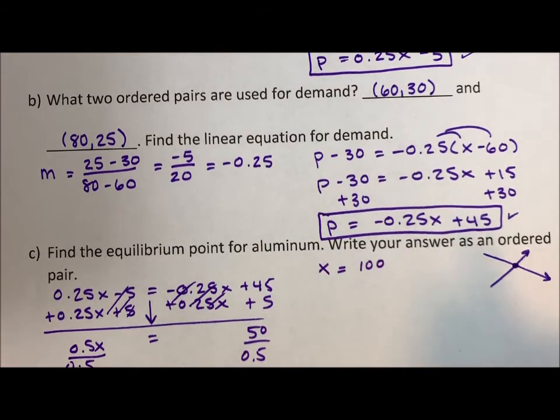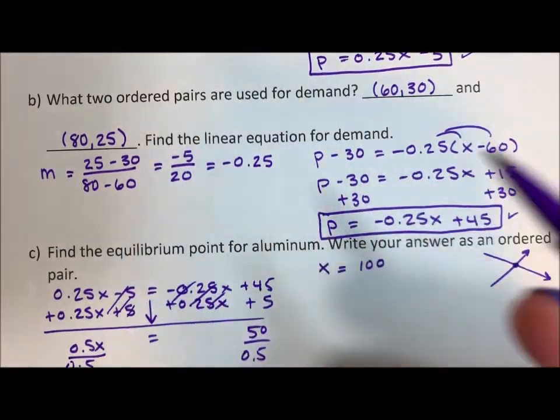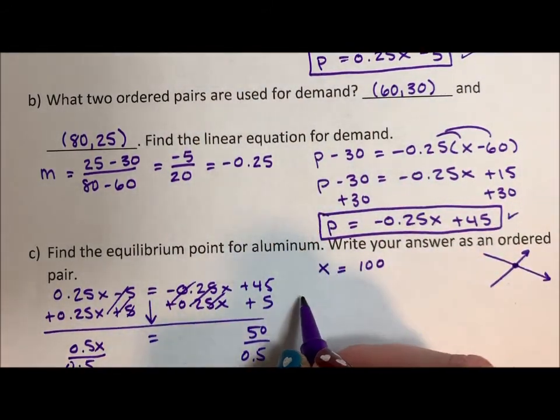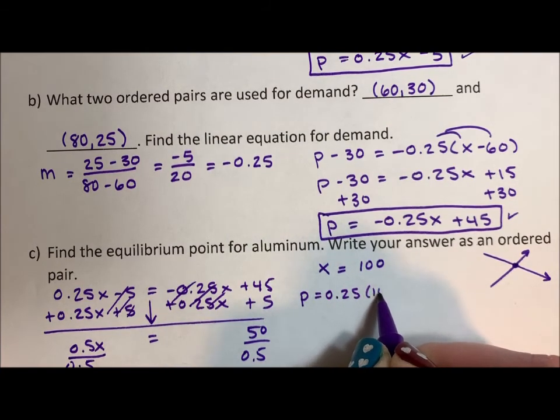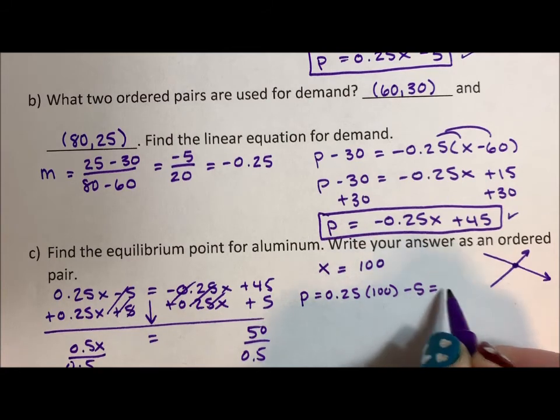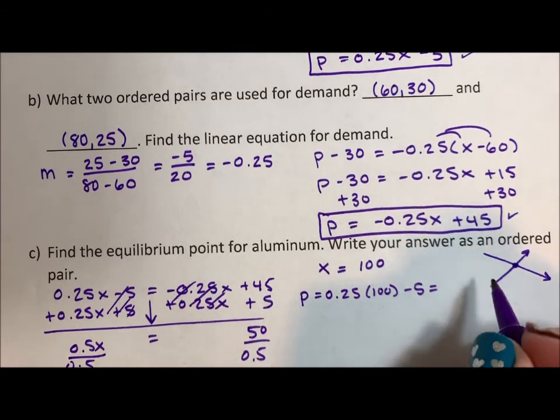Then I want to test 100 into both of my equations to make sure all my math is correct. So p is equal to 0.25 times 100 minus 5. And if I plug all of this into a calculator, I get 20.